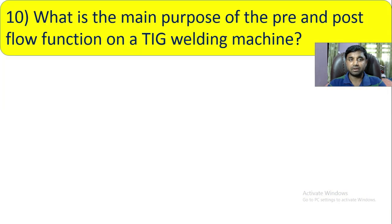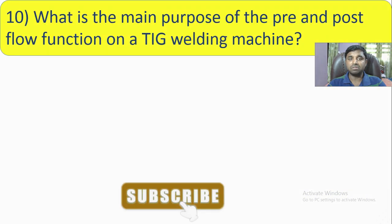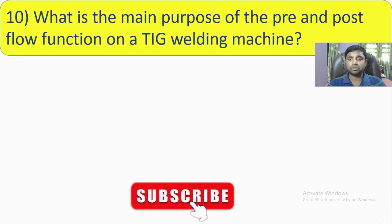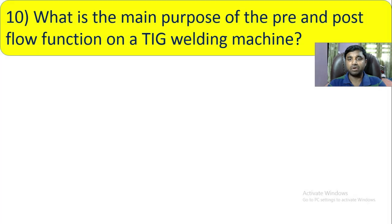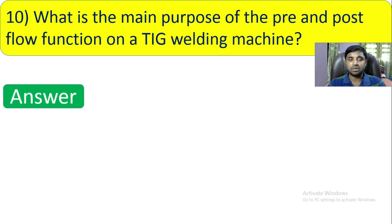Question number 10: What is the main purpose of the pre and post flow function on a TIG welding machine? The answer is to prevent surface inclusion. The pre and post flow function is used to avoid surface inclusion.